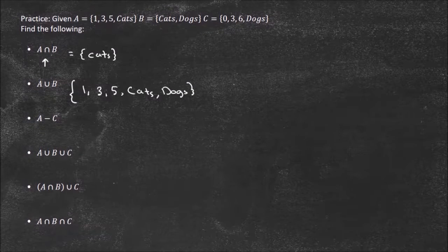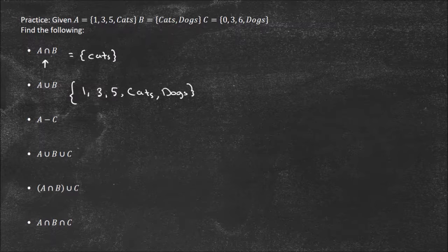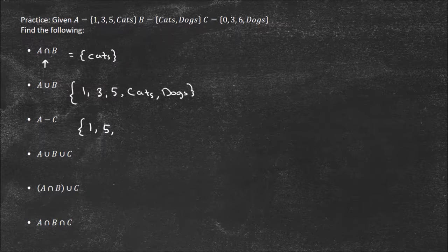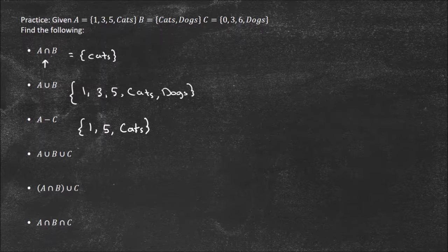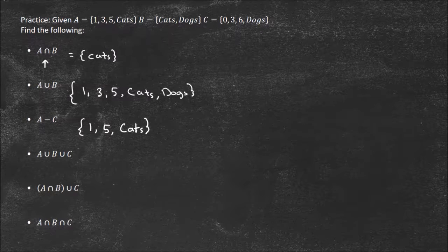Alright, so A minus C. So this means that it's inside of A, but it's not inside of C. Just like subtraction in real life, it's A take away C. And what can C take away from A? Well, it's just that 3, right? That's the only thing they share in common. So it's going to be 1, 5, and cats. It's everything in A except that 3.